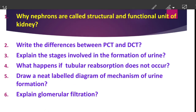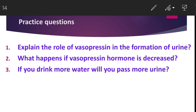Explain the role of vasopressin in the formation of urine. Concentration of urine takes place in the collecting tubes in the presence of a hormone called vasopressin. This hormone is secreted only when concentrated urine is to be passed out. If vasopressin hormone is absent, the urine becomes diluted and large amounts of water are lost from the body.